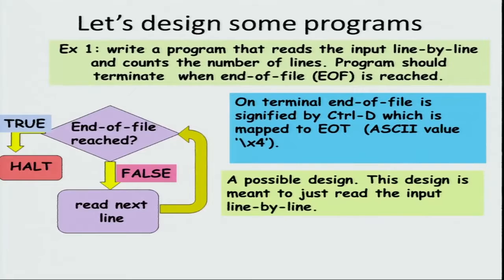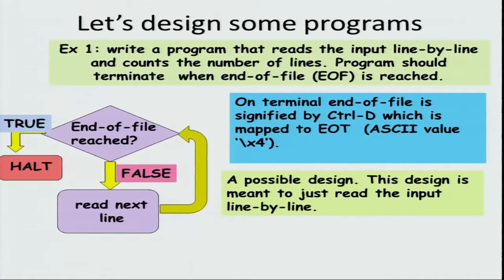The flowchart at the very top level can be envisioned as follows. We will check whether the end of file has been reached. If the end of file has not been reached, you read the next line. If it has been reached, you halt; otherwise you read another line. This design is just meant to read the input line by line — it is a very vague flowchart, but at the top level this is what we want to do.